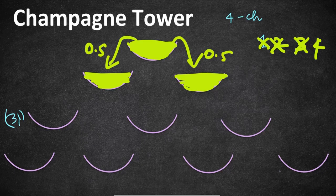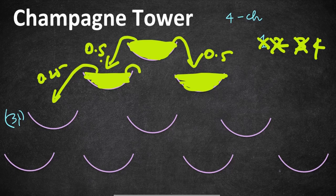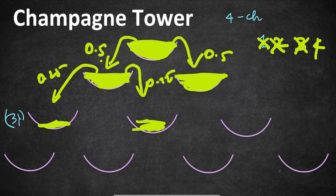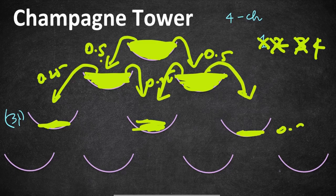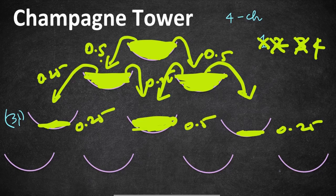The fourth glass also fills one complete unit. Pouring it into the top glass, it equally divides to 0.5 left and 0.5 right. Since those glasses are already full, it further divides each 0.5 into 0.25 to the left and 0.25 to the right. So the first glass in row three gets 0.25, the last glass gets 0.25, and the middle glass receives 0.25 from both sides totaling 0.5.